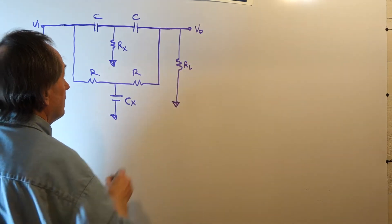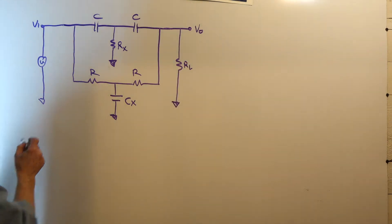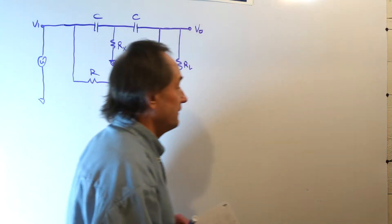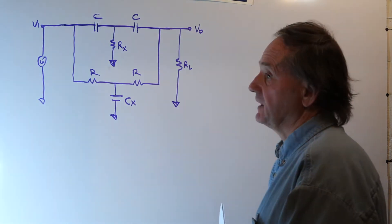We have a load resistor at the output and we're driving the input with some AC voltage V1. This is going to be an AC network problem.